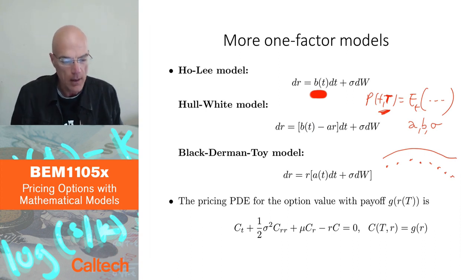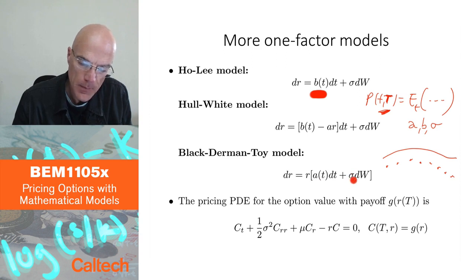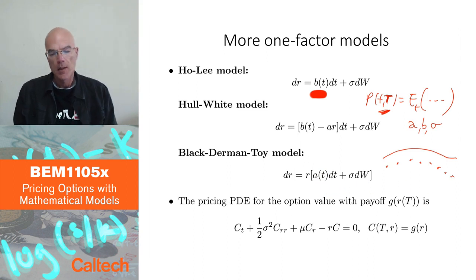And then there is a Black-Derman-Toy model, which is the one with r both in the drift and r in multiplying sigma, r is multiplying everything. So it's like Black-Scholes model, really, except for the interest rate and not for the stock price, and you make maybe a deterministic function of time to have infinitely many parameters.